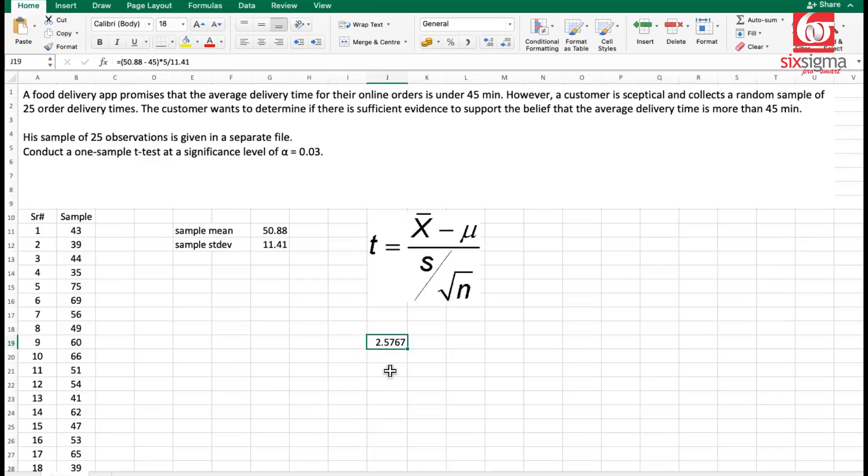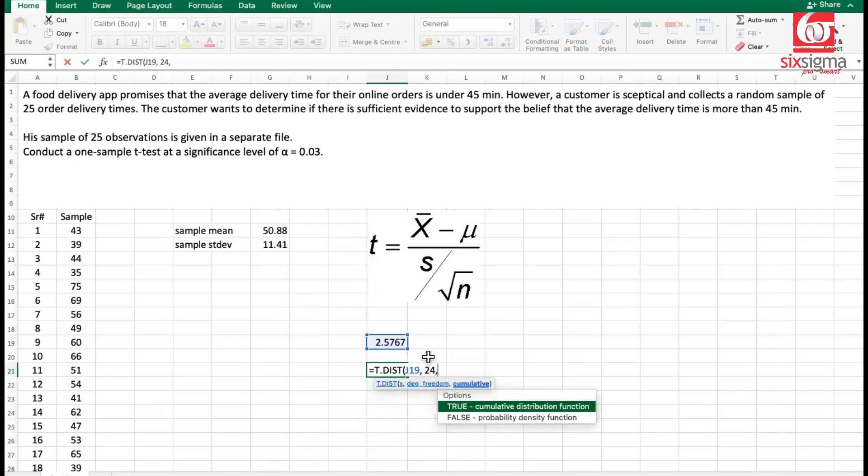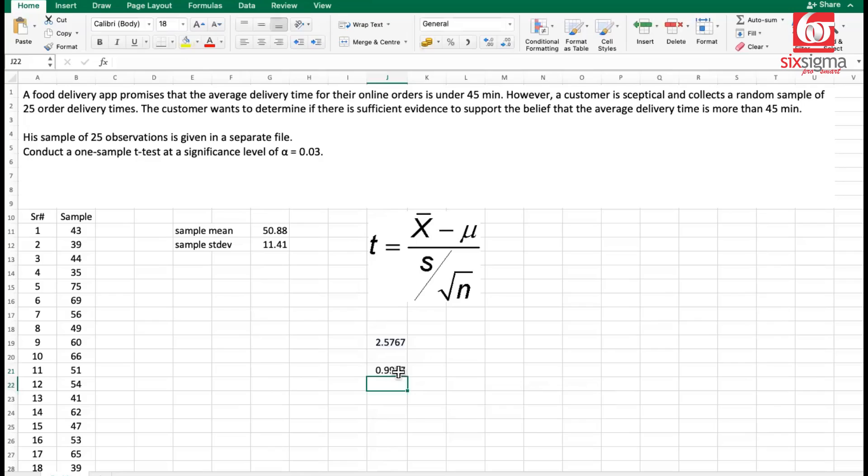Can we translate this into p-value and compare it with the alpha, which is 0.03? So in order to do that, we have a formula here, which is nothing but T distribution. Here, we can put the value of X, which is 2.58, approximately. The degrees of freedom. So our T distribution, remember, is characterized by its degrees of freedom. That will be 24 in this case, 25 minus one. And it is a cumulative calculation. Again, this comes to 0.9917. Will this be the answer? Let's understand what is this visually.